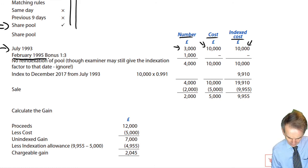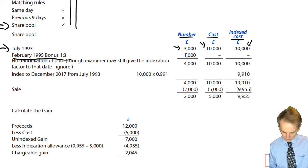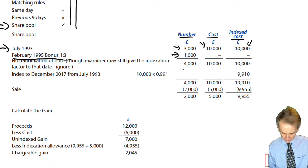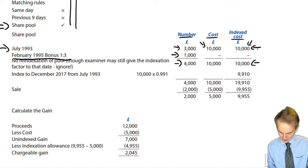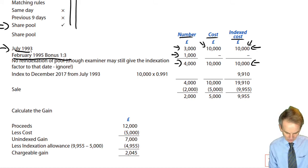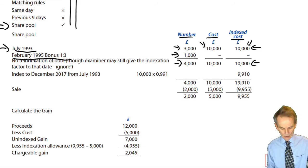In February 1995 we have a bonus issue. A 1-for-3 bonus on 3,000 gives another 1,000 shares. So all that changes is the number of shares — you now have 4,000 shares with a cost of £10,000 and an index cost of £10,000. That index cost is dated back to July 1993. There was no re-indexation to the date of the bonus issue.